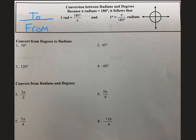Our relationship between radians and degrees is there are π radians for every 180 degrees.